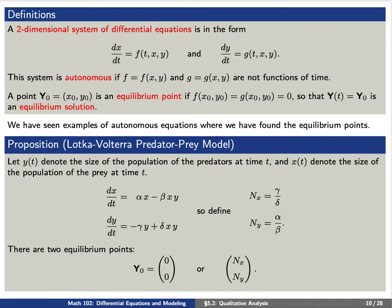We've seen a few examples of autonomous equations where we have found all of the equilibrium points. Let's consider the predator-prey model. This is a system of the form dx/dt equals alpha times x minus beta times x times y, and dy/dt equals negative gamma times y plus delta times x times y.